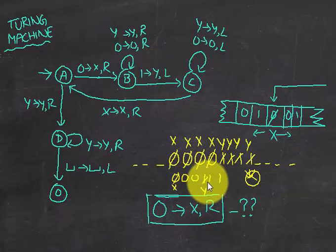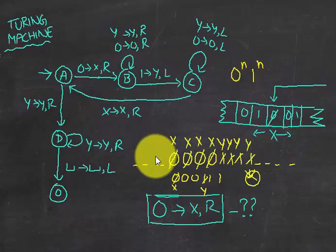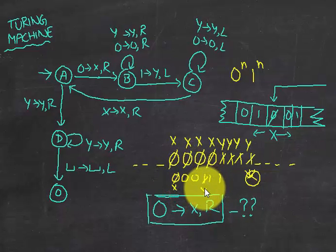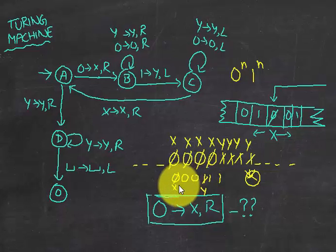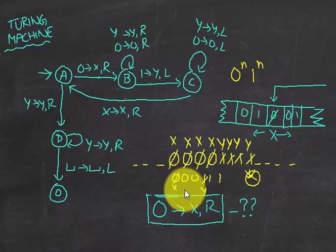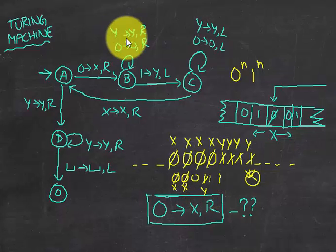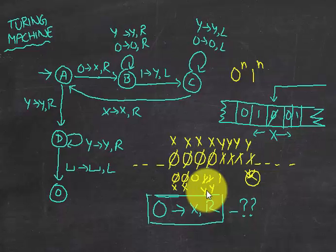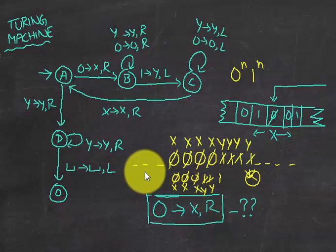We immediately move left — we don't look further, we just need to match the numbers of zeros and ones. This proves the language 0^n 1^n. After converting one to Y we move left, ignore zeros, ignore Y's, and keep moving left until we reach X. When we reach X we do nothing — X is converted to X, meaning no change — and move one step to the right. Then we start the process again by converting the next zero to X.